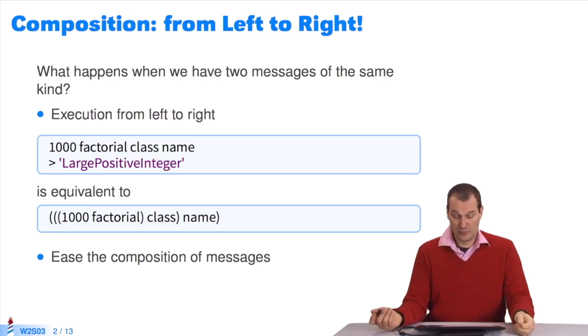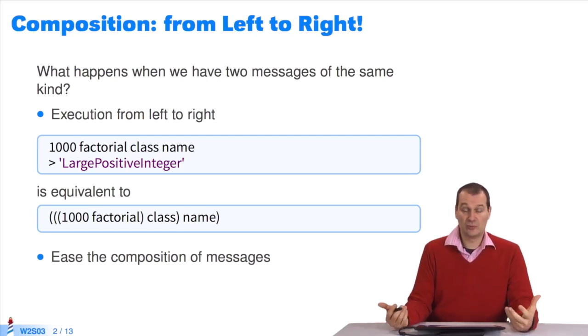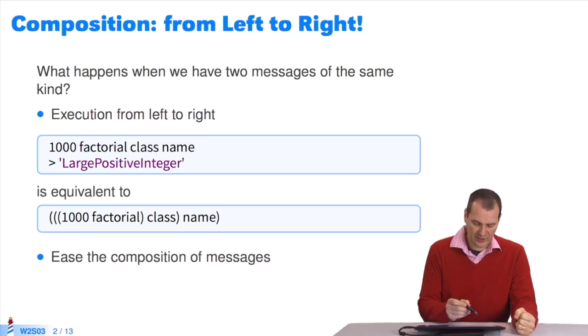The question that needs to be asked is, what happens when you have a sequence of unary messages? I wrote the following expression, 1000 factorial class name. What happens?